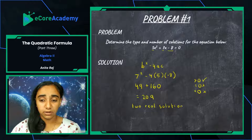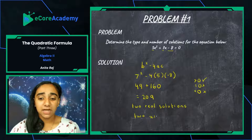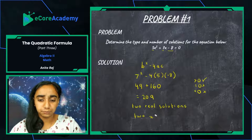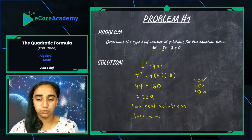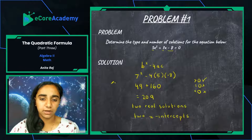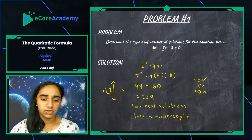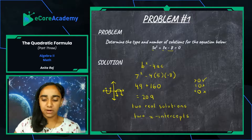The type of quadratic it is: it has two x-intercepts. The number of solutions it has is two real solutions. This would look something like that first possibility we saw, where the parabola touches the x-axis in two different spots. This quadratic equation passes through the x-axis twice so it has two different solutions.